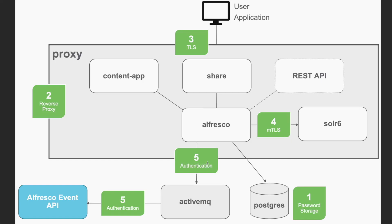Finally, the fifth step is related to the ActiveMQ service, which is used for asynchronous message production and consumption. The Alfresco repository produces messages every time a document is created or updated, while the Alfresco Event API — the out-of-process SDK — consumes these messages. Using credentials authentication protects unauthorized access to these resources.